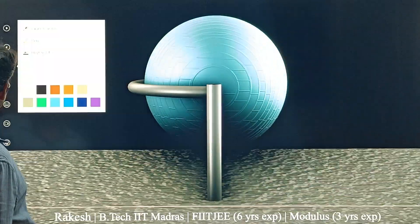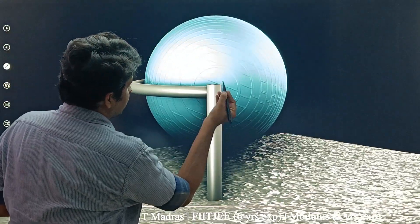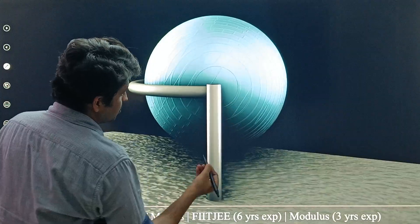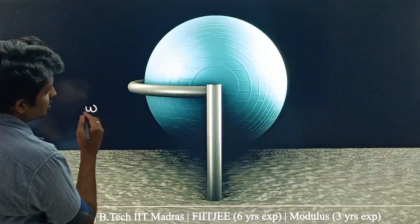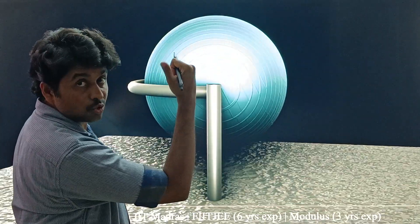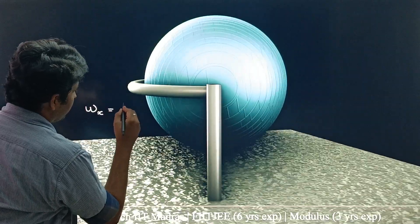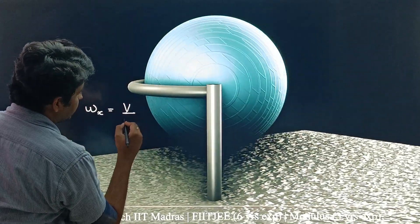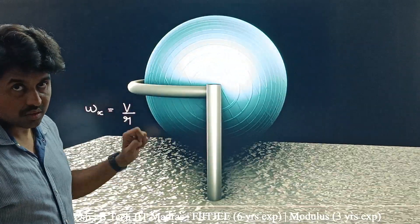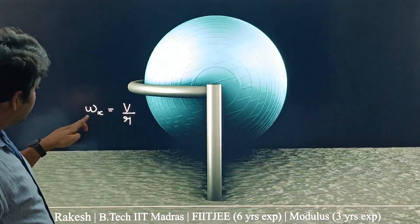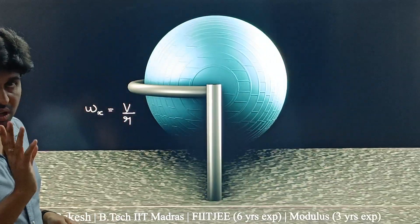If this sphere is V and this is R, we can say omega, this omega. See, this side is omega, right? We will say this is omega x equal to V divided by small r, where small r is the radius of the sphere. Just remember this, omega x is in this direction and it is equal to V by small r.